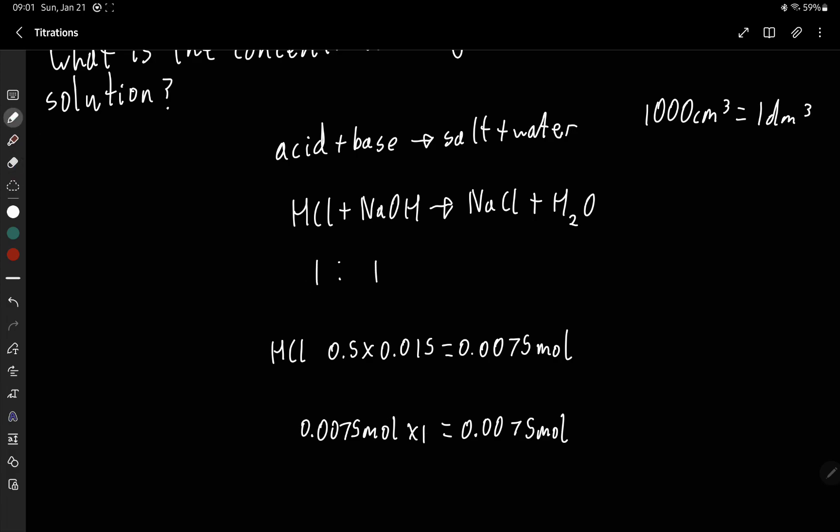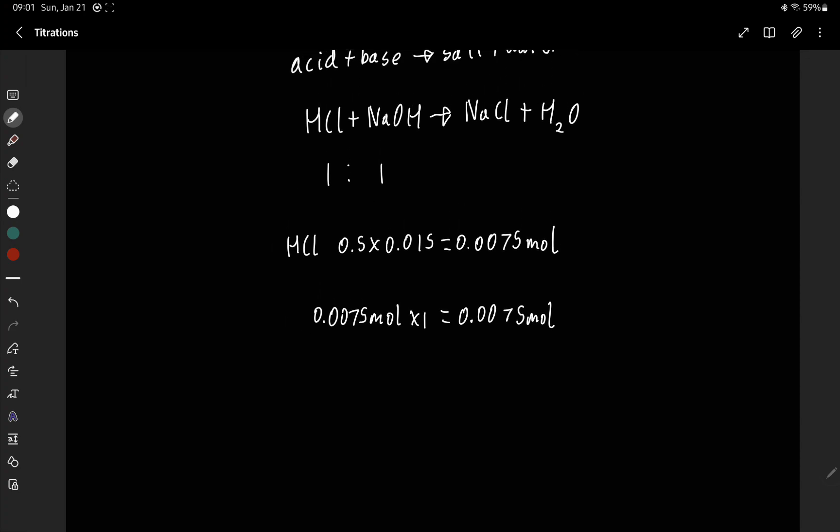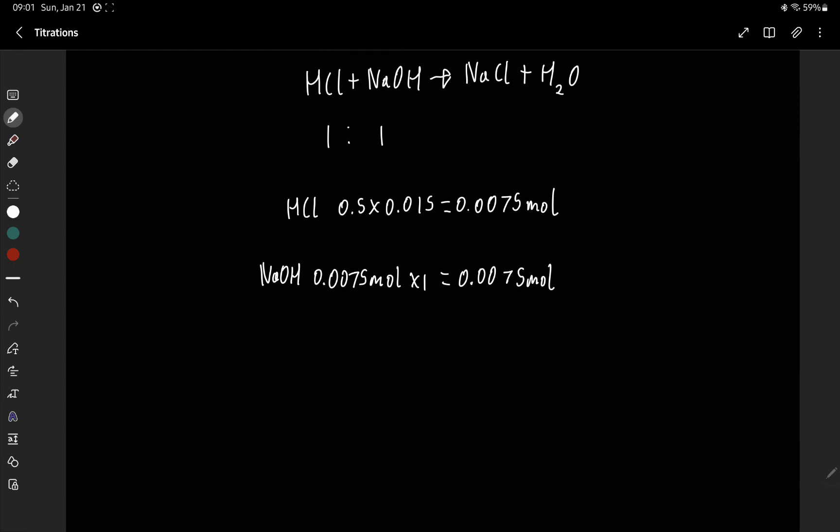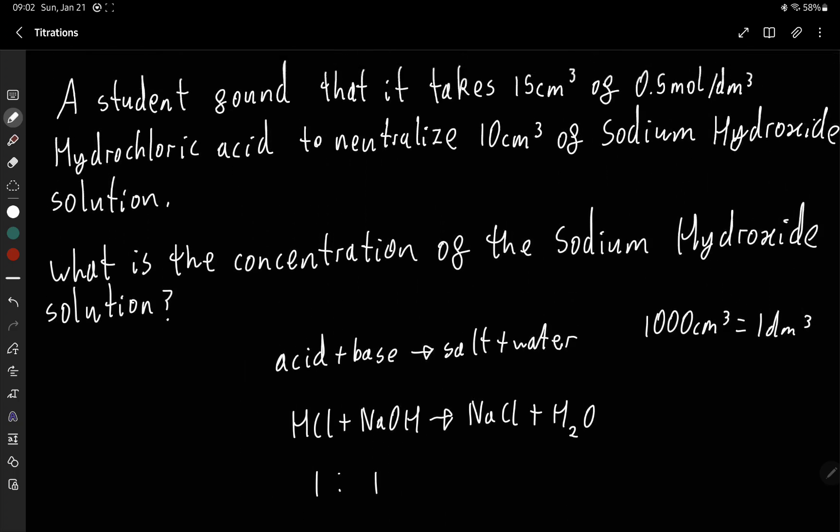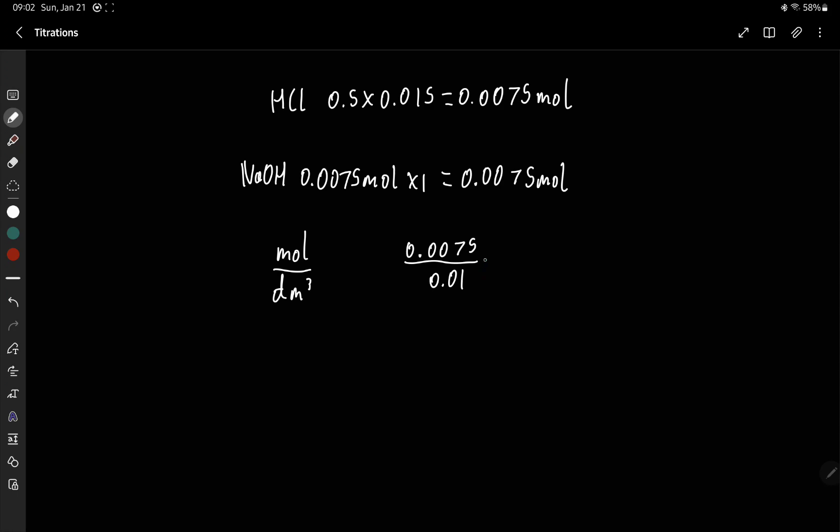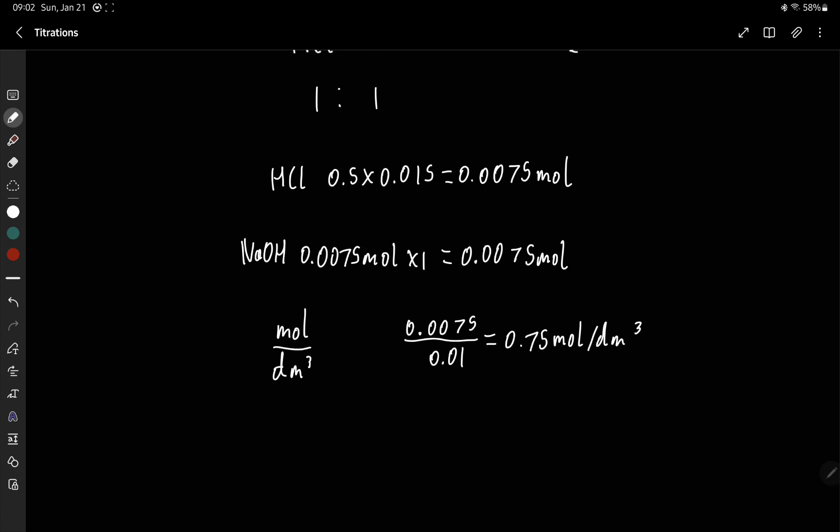So if we continue, we now know the moles of sodium hydroxide is 0.0075. So if we use the concentration calculation, which is just moles over decimeters cubed, if we just plug that in, we get 0.0075 over 0.01—because remember we're converting 10 centimeters cubed into decimeters cubed—that gives us 0.75 mole per decimeter cubed, and that is the concentration.